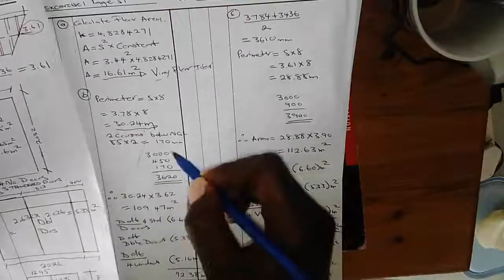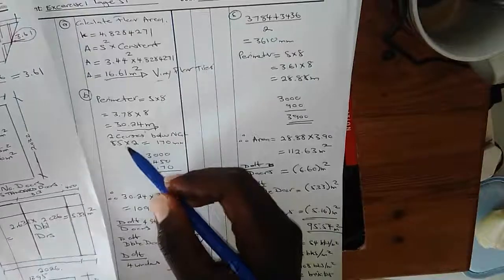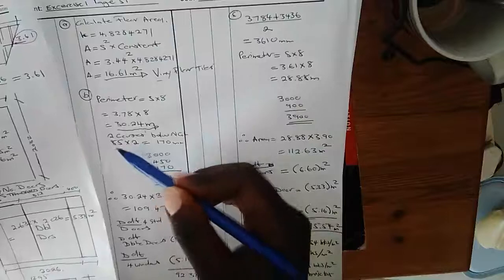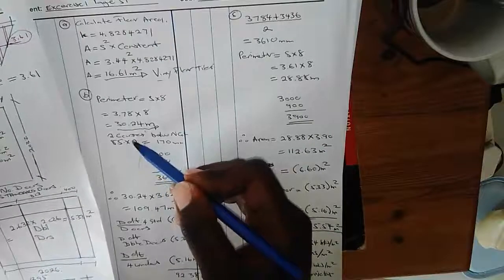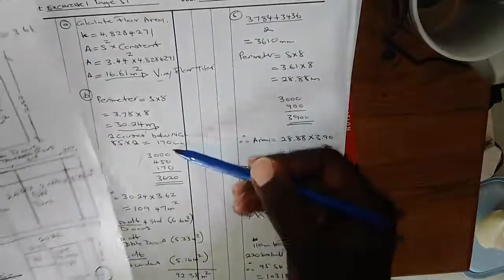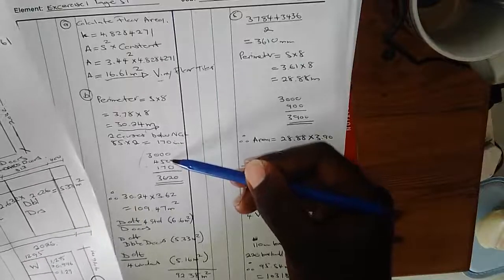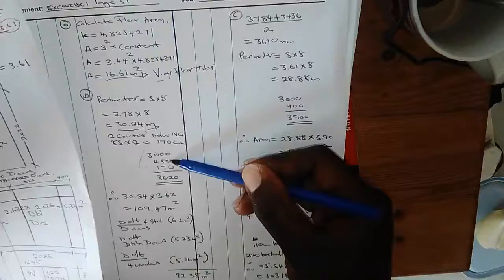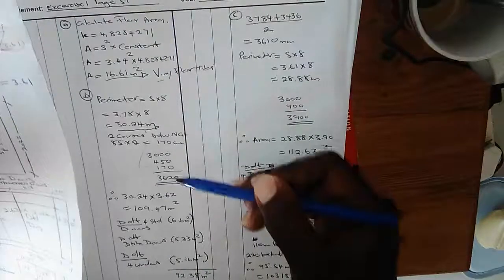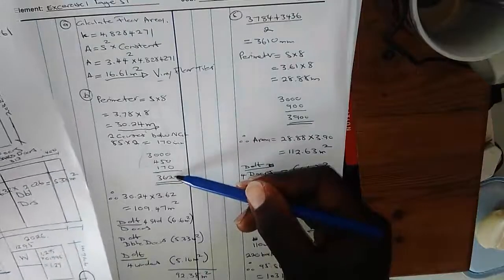We need a second dimension to multiply and get our surface area. First, let's work out the depth of our two courses: 85mm representing one course times two equals 170mm. We then add the three meters from wall plate level to finished floor level, plus 450mm from finished floor level to ground level, plus 170mm — giving us 3,620mm total height.